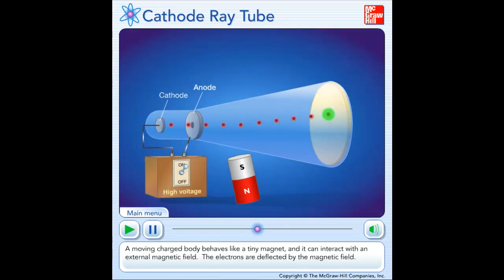A moving charged body behaves like a tiny magnet and it can interact with an external magnetic field. The electrons are deflected by the magnetic field.